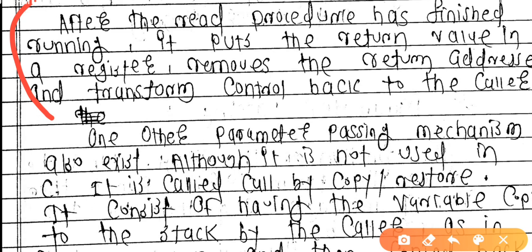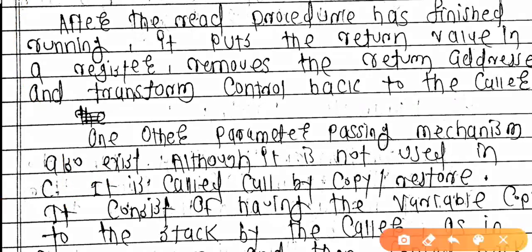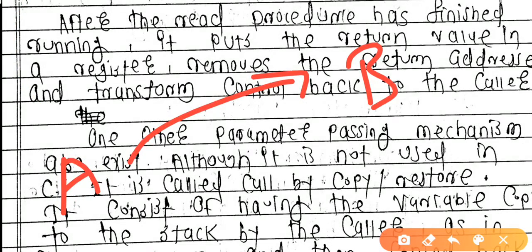After the read procedure has finished running, it puts the return value in a register, removes the return address, and transfers control back to the caller. When the call is complete, Machine A receives the result from Machine B.